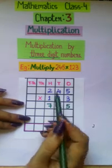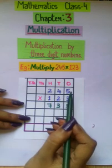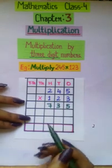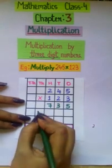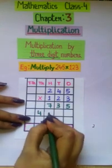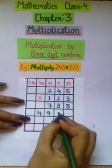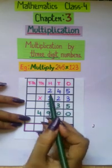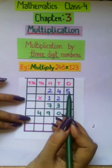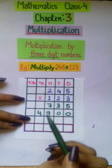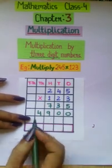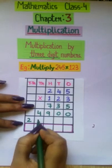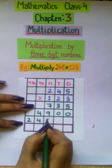Then we multiply 245 into 2 10's or 20. And the answer is 4900. Then lastly we multiply 245 into 1 100's. And the answer is 24,500.